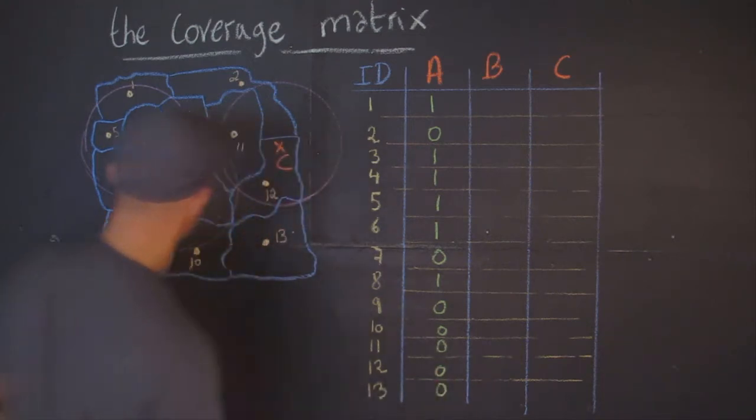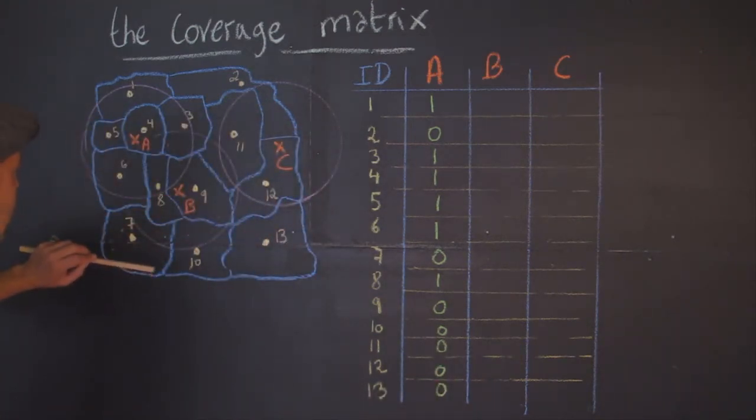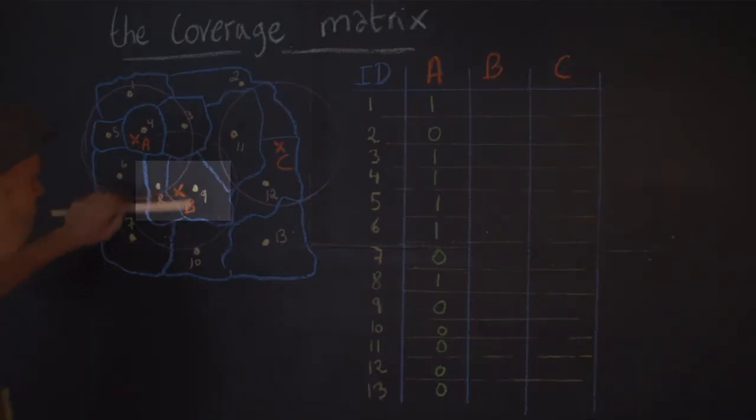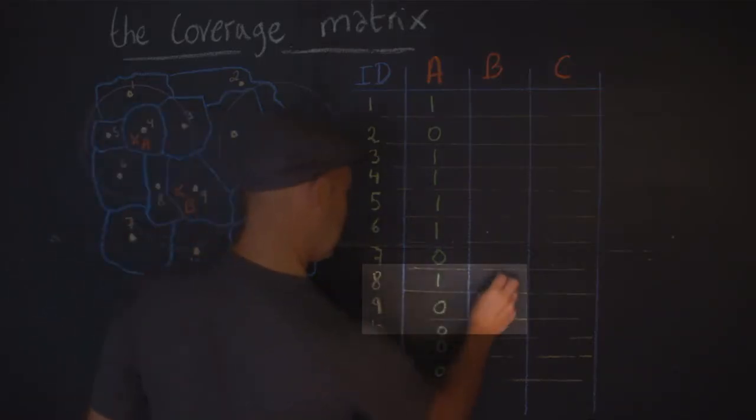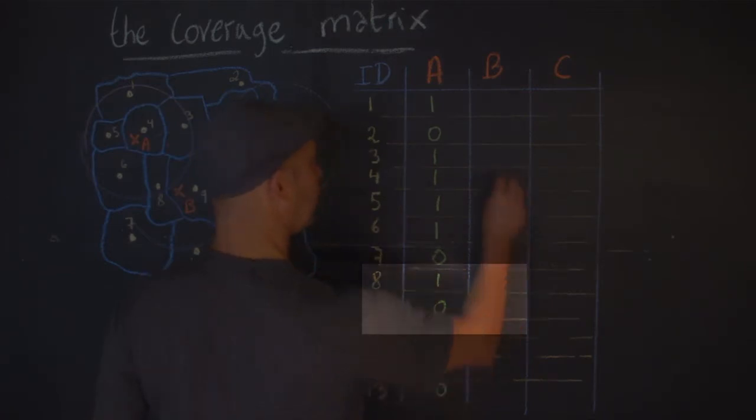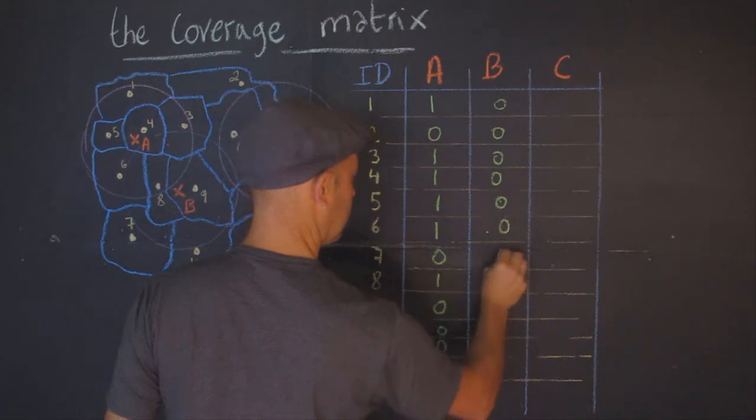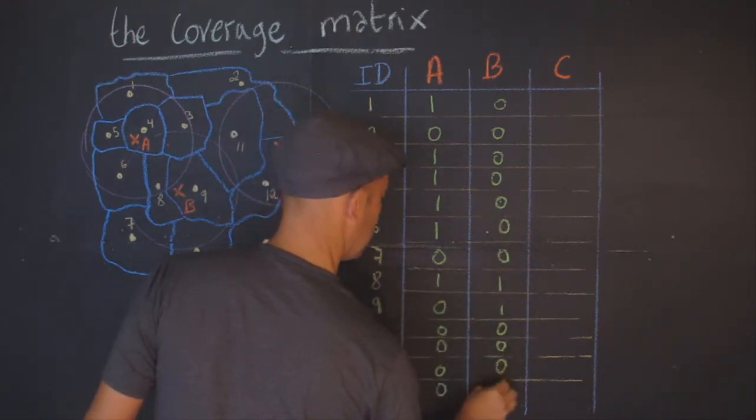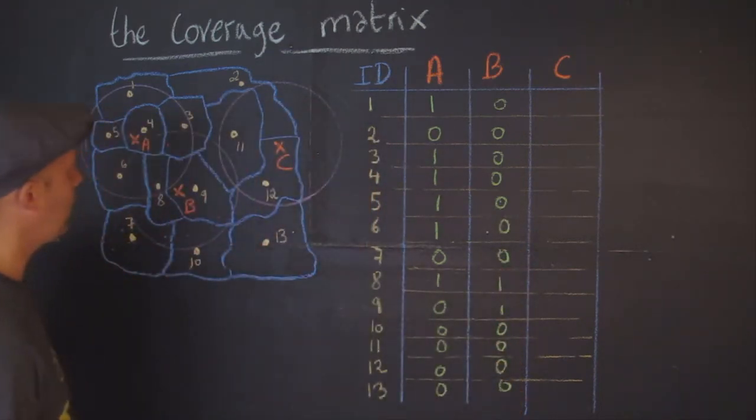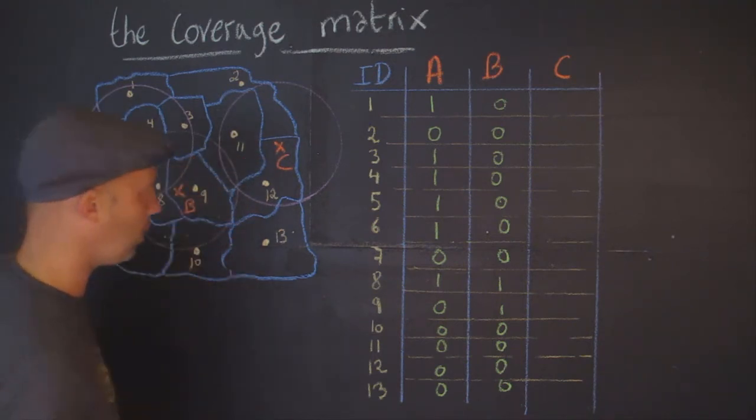Next one, facility B here, more in the center. Which ones are part of it? I can actually just see and say eight and nine only, and all the others are zero. And finally, C covers 11 and 12, and all of the others are zero.